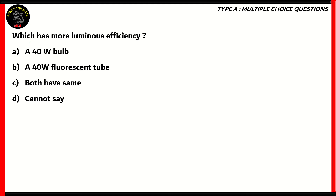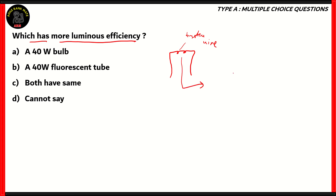Next question: which of these has more luminous efficiency — a 40-watt bulb, a 40-watt fluorescent tube, both are the same, or cannot say? In a bulb, current passes through a tungsten wire, which produces heat, and then produces only about 5% of light energy. So if you provide 40 watts to the bulb, only 5% turns out to be light while the rest is wasted as heat.